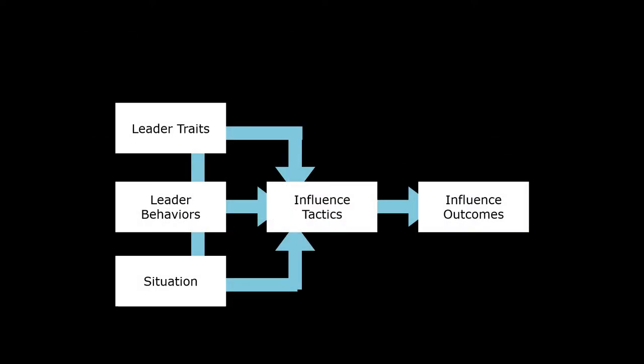The model shown here illustrates that the end results of a leader's influence — the outcomes — are a function of the tactics he or she uses. The influence tactics are in turn moderated or affected by the leader's traits, the leader's behaviors, and the situation.